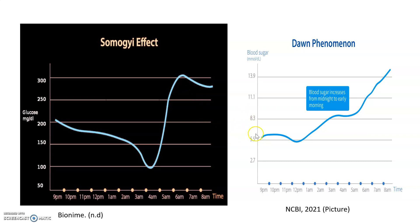With the Dawn phenomenon, this person will get their insulin, but not enough insulin to lower the blood glucose. So what you see is that the blood sugar increases from midnight to early morning, and you will see a high level of glucose in the blood.